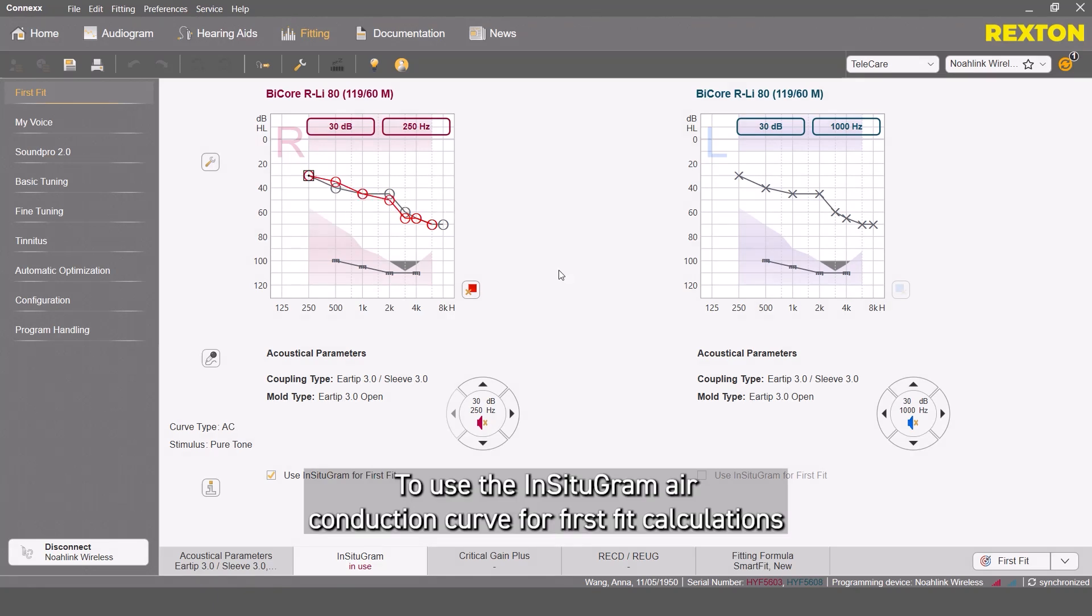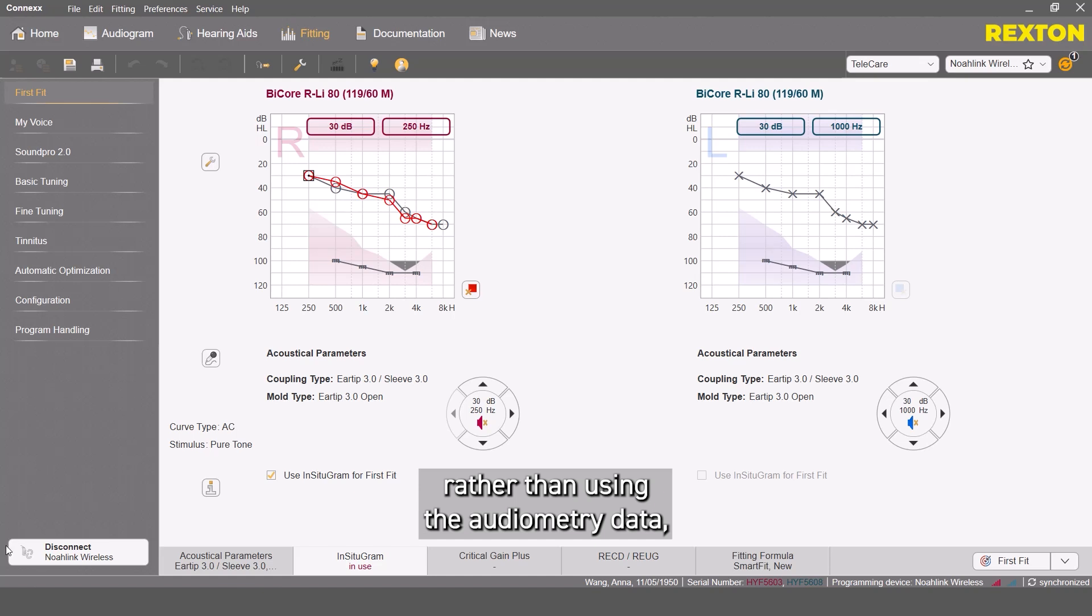To use the Incitogram air conduction curve for the first fit calculations, rather than using the audiometry data, just check this box and see In Use in the tab. Bone conduction and UCL remain untouched.